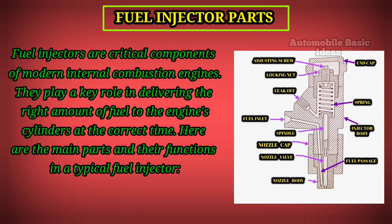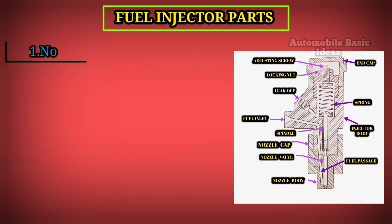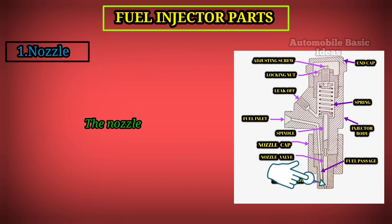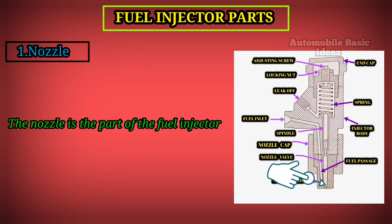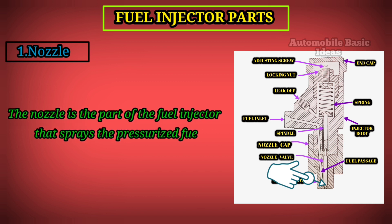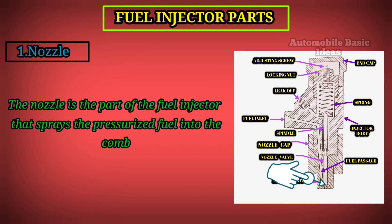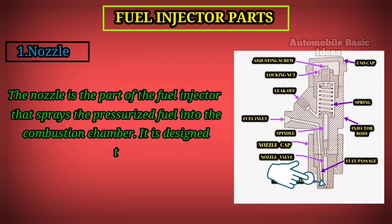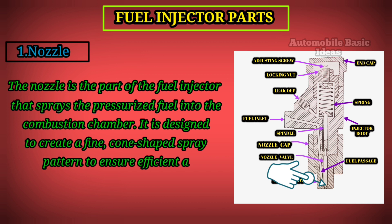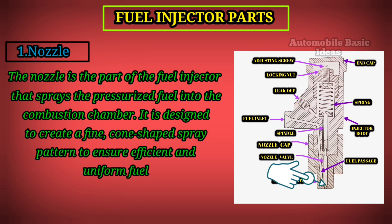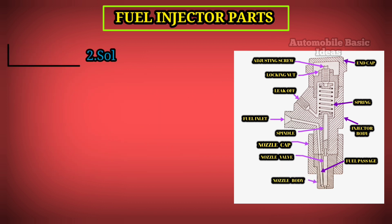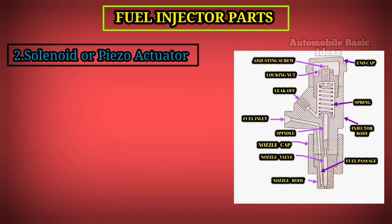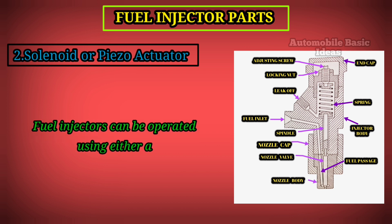1. Nozzle. The nozzle is the part of the fuel injector that sprays the pressurized fuel into the combustion chamber. It is designed to create a fine cone-shaped spray pattern to ensure efficient and uniform fuel distribution.